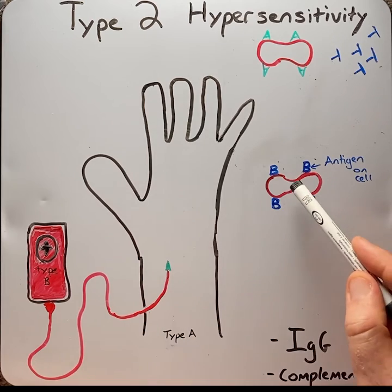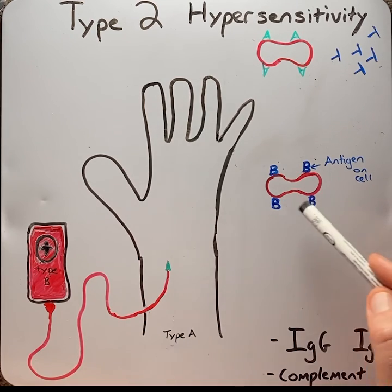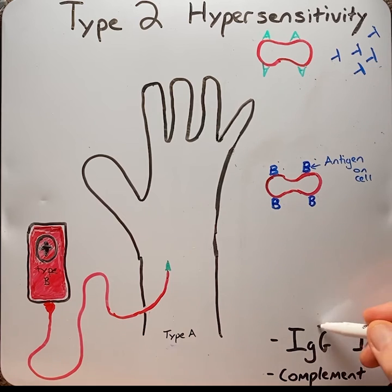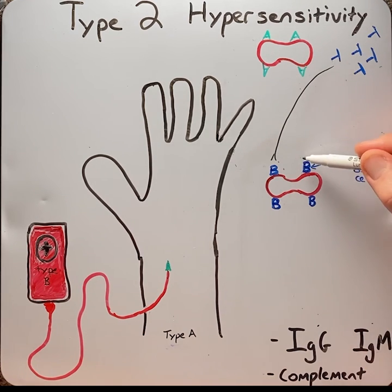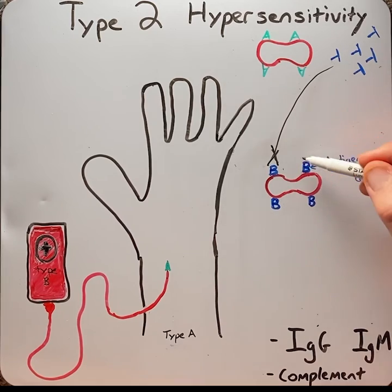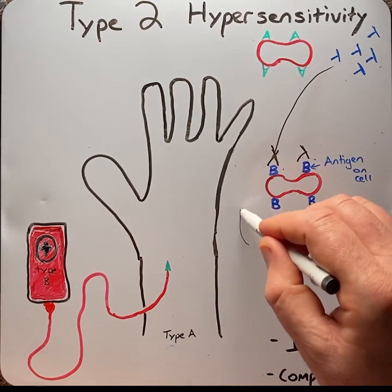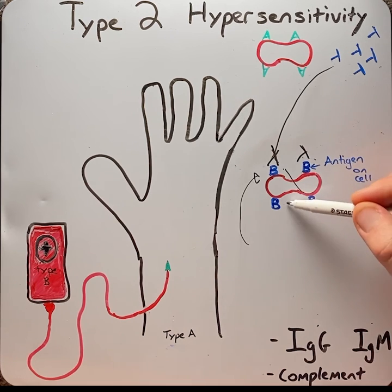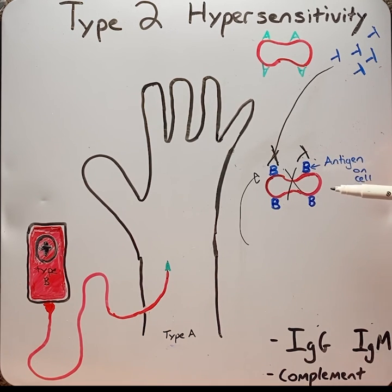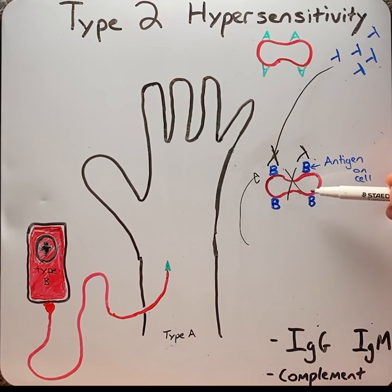which means this blood has B antigens on the red blood cells, the antibodies — which are IgG or IgM — react to these type B antigens and bind to them, activating the complement protein system and ultimately leading to the destruction of these red blood cells or their cytotoxicity.